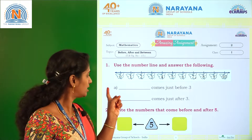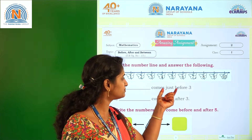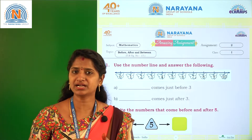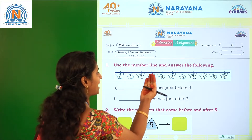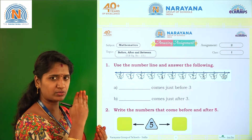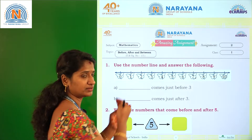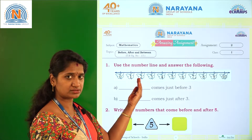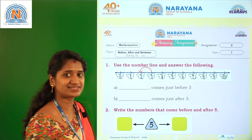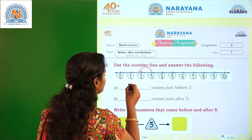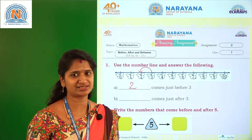Let us check the questions. Question number 1a: the blank comes before 3. Which number comes before 3? Before means backward counting — we need to count backwards. So the backward count of 3 is 2.